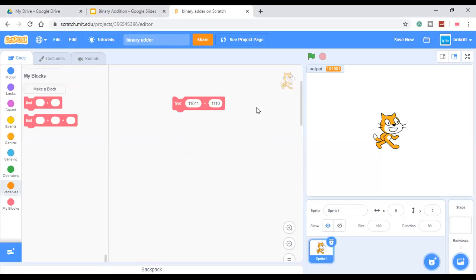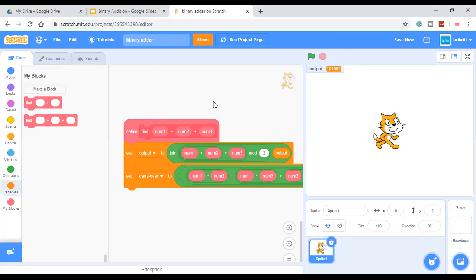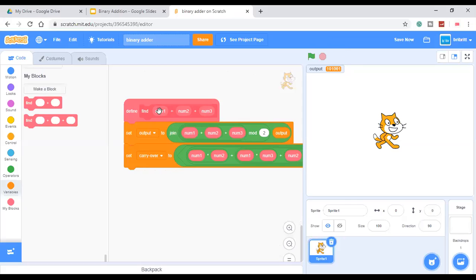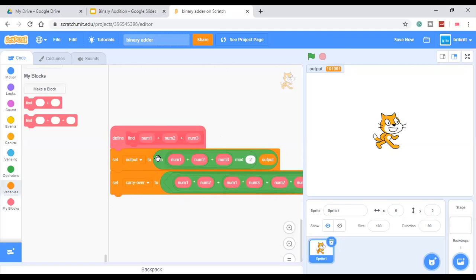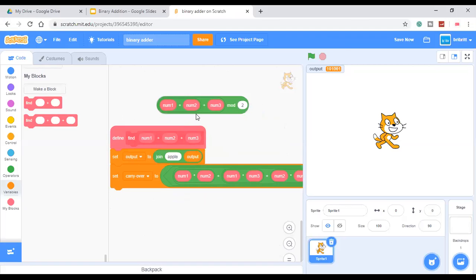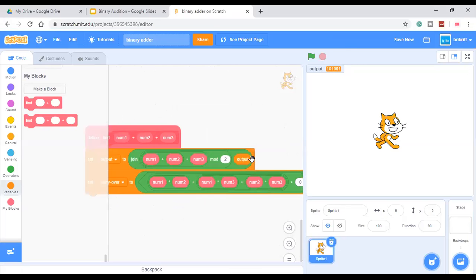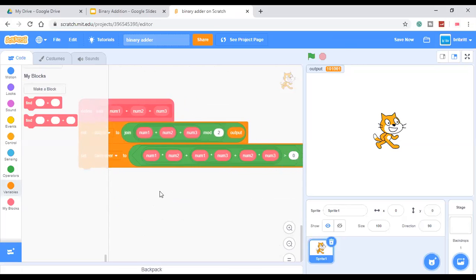Alright, we want to know the code on finding this binary adder. First we'll see how to find the sum of 3 binary numbers, 3 binary single digit numbers actually. Set output to join num1 plus num2 plus num3 modulo 2, and output actually.